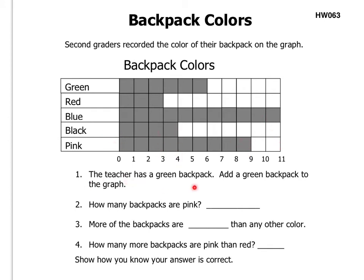So the teacher has a green backpack. Add a green backpack to the graph. So I'll do that one for you. Even though I'm shading it in red, you just shade in one of the boxes. So I added one box to the green. So now it matches up with 7. One more than 6, which it was originally.